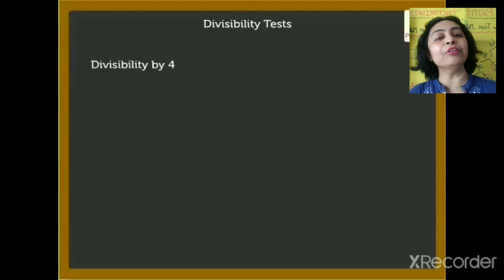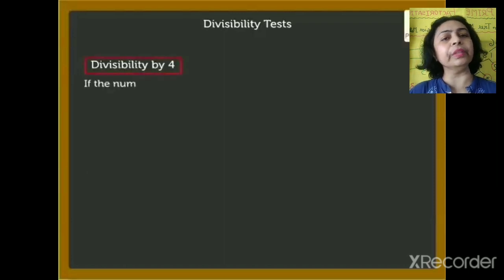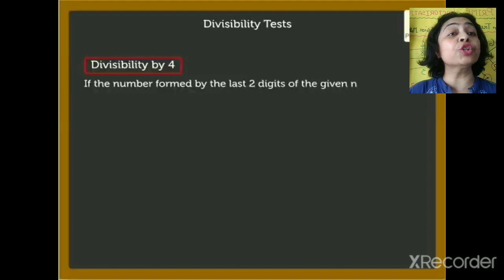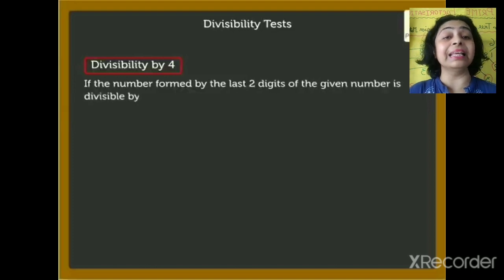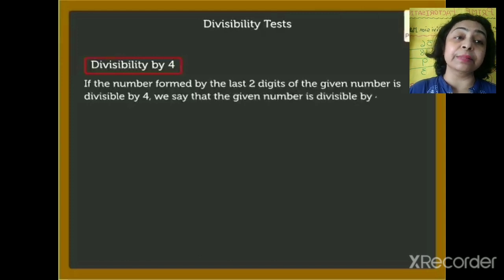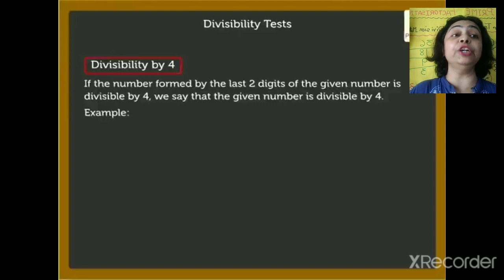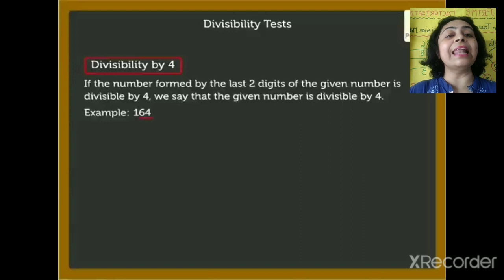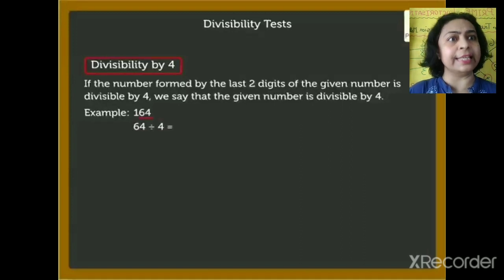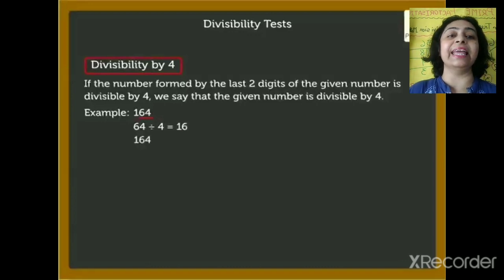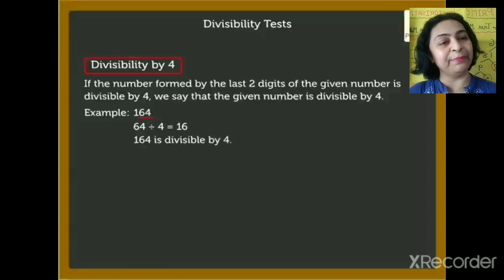Now, divisibility by 4. If the number formed by the last two digits of the given number is divisible by 4, we can say the given number is divisible by 4. Also, if the last two digits are zeros, it is also divisible by 4. For example, looking at the last two digits: 64. Is 64 divisible by 4? Yes, so we can say 164 is also divisible by 4.